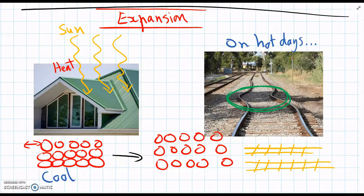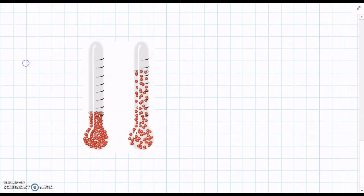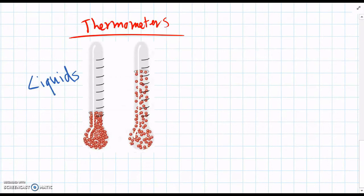So on summer days, sometimes a whole train line can get shut down because of that. And the last example you might have seen expansion is in thermometers, where they actually use expansion, but of a liquid, to help show the temperature. So liquids can expand as well when they get hotter, and expansion happens for liquids and gases too.